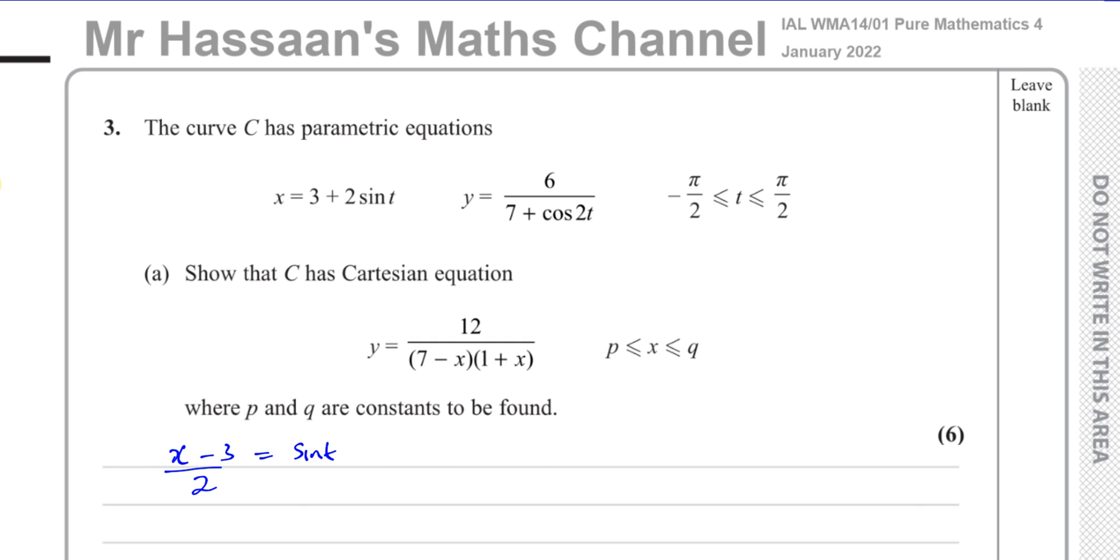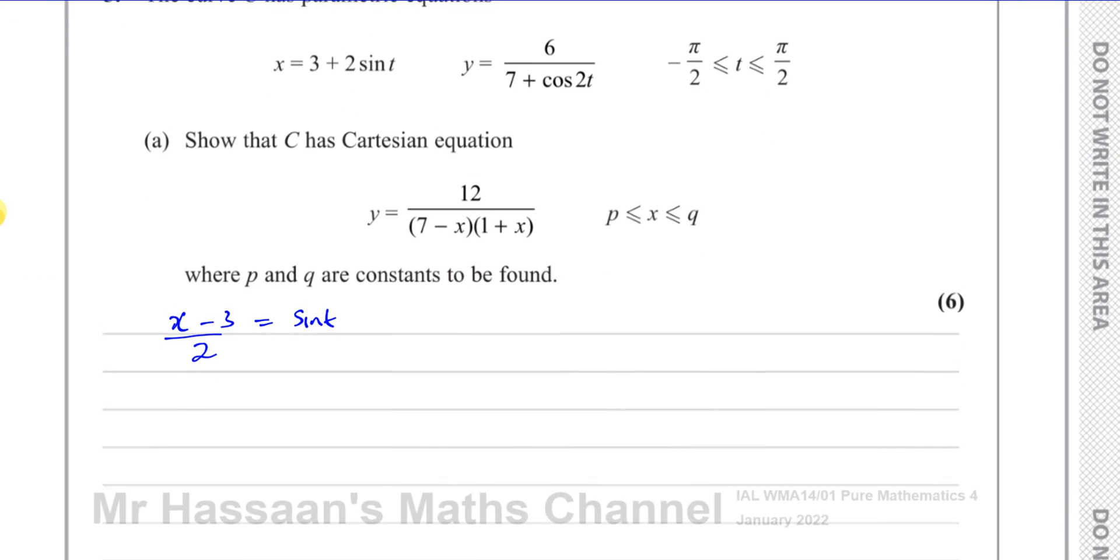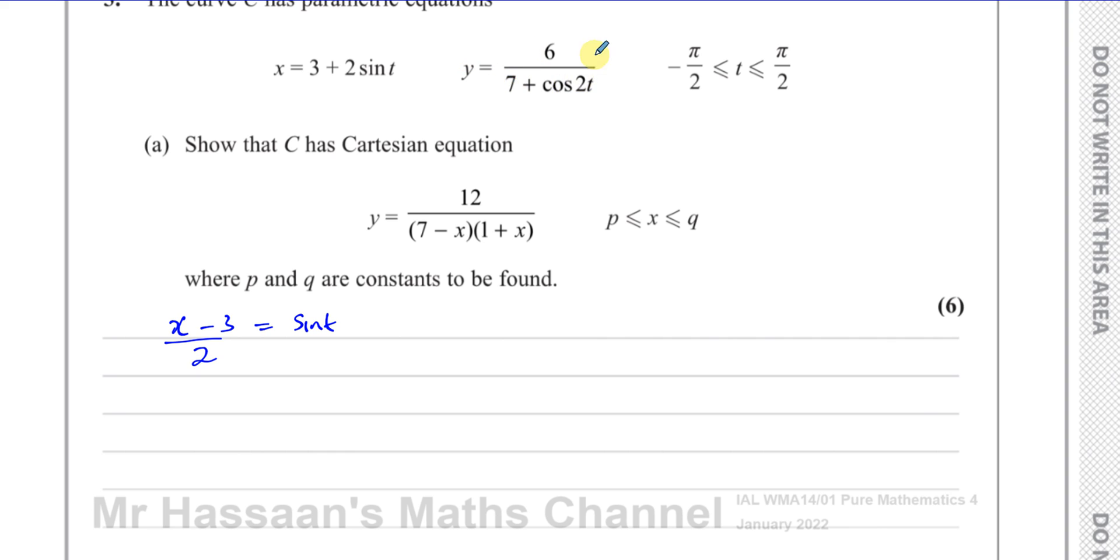And if I can try to express this cosine 2T and rewrite it so it's in terms of sine T, then I can replace the sine T in that with X minus 3 over 2. That's how you're supposed to deal with this by substitution. So I've got to find a way of taking cosine 2T and rewriting it in terms of sine T.